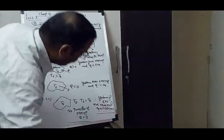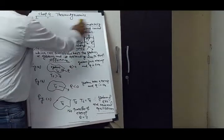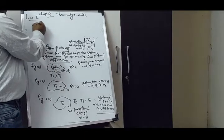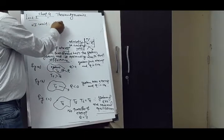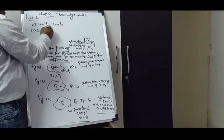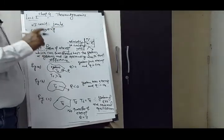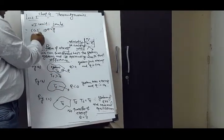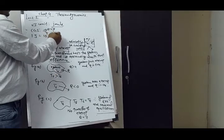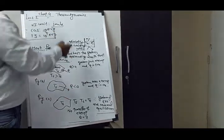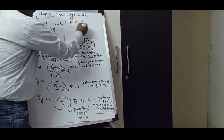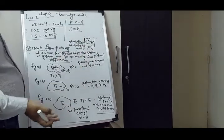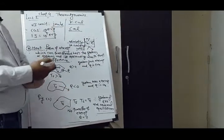The SI unit of heat is Joule. The CGS unit of heat is erg, and the relation is 1 Joule equals 10 to the power 7 erg. Another practical unit is kilocalorie, and also calorie. Both kilocalorie and calorie are units of heat.